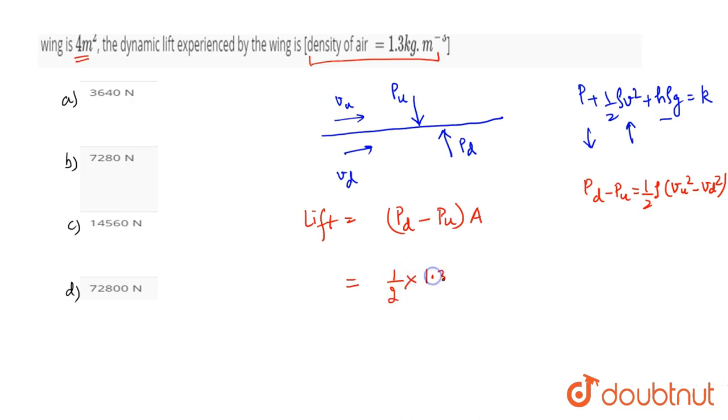If we put this in the equation, then lift equals 1 by 2 multiplied by rho 1.3 multiplied by upper velocity 80 meter per second square minus downward velocity 60 meter per second square, and area is 4 meters.